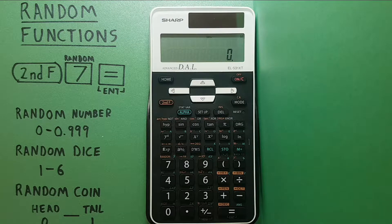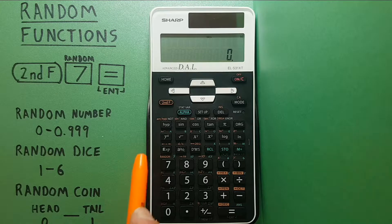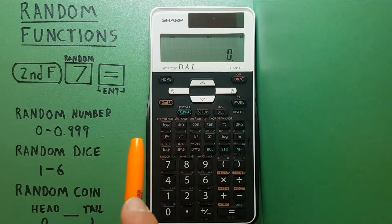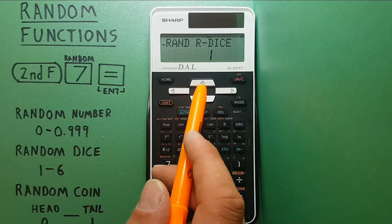To get into the random number function on this calculator we press second function seven and it brings up this screen.